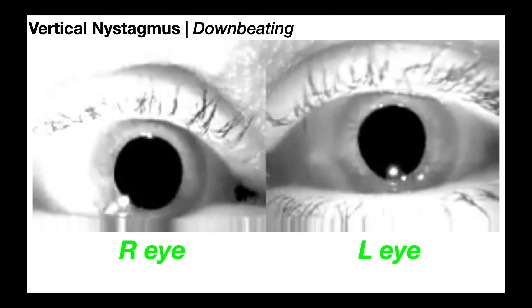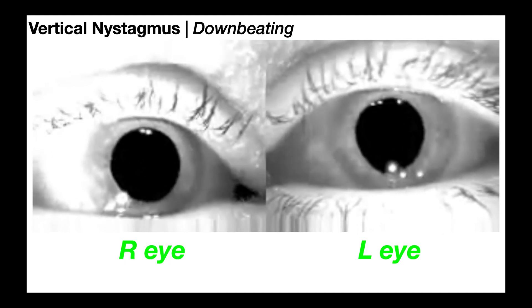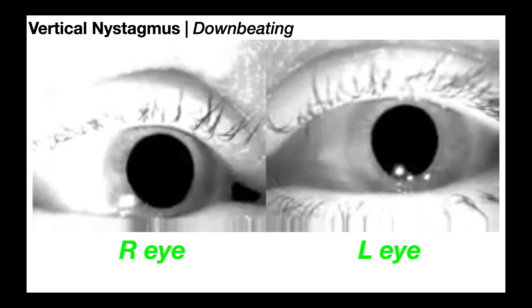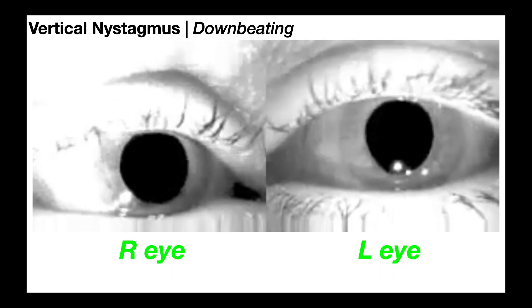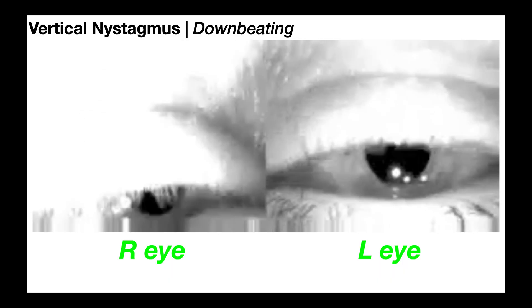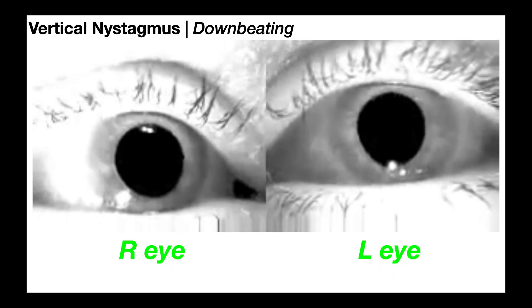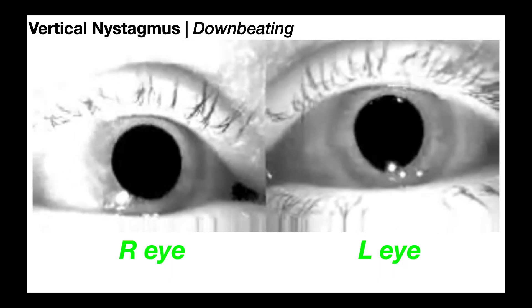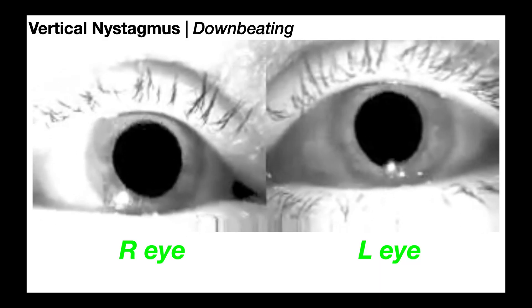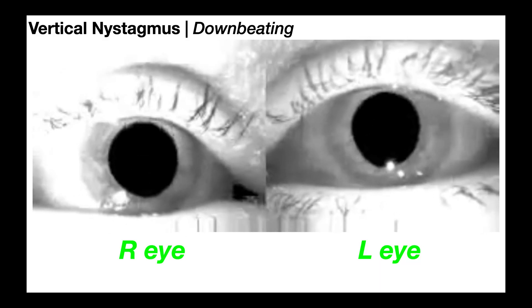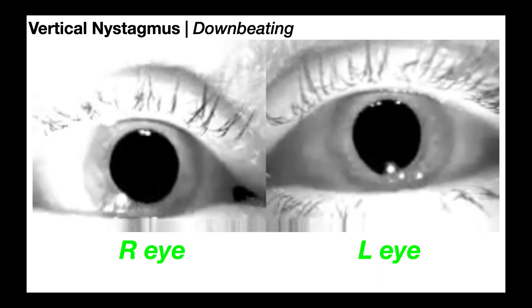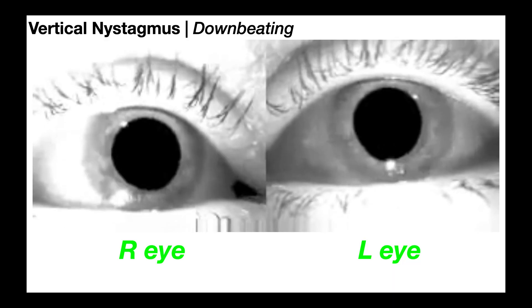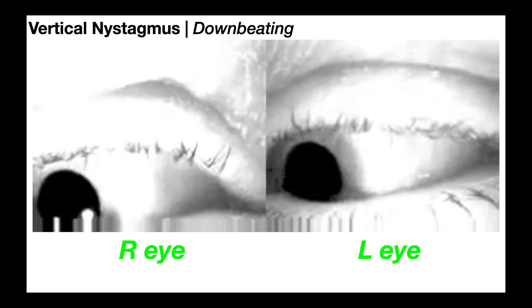This would be downbeating nystagmus. This one is a little easier to see — the fast beat is downwards. There would be a slow upbeat to return the eyeball to its original position, but we only care about that fast beat. So this is downbeating nystagmus.